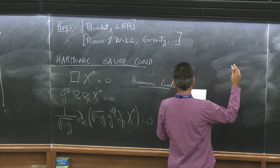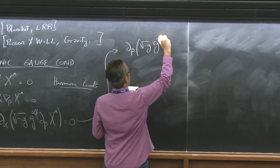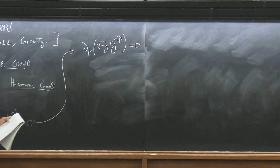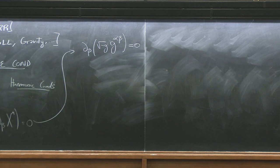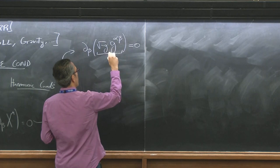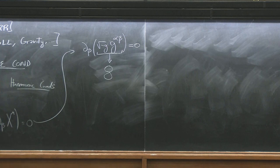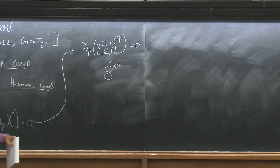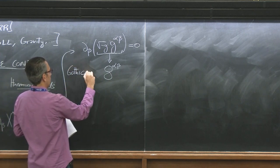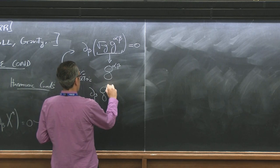Now we have that this expression turns into d-beta acting on root minus g times g-alpha-beta equal to zero, which can also be written as the contraction of the metric with a Christoffel symbol. What we do in post-Newtonian theory is we introduce a quantity — the gothic metric, which I'm writing as a calligraphic g or '8' — defined as root minus g times g-alpha-beta. So the gauge condition becomes just d-beta on the gothic g has to vanish.